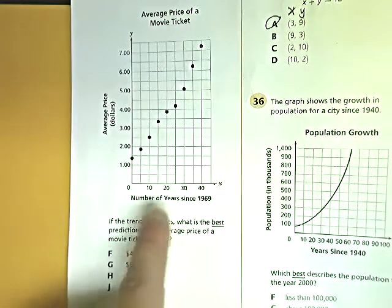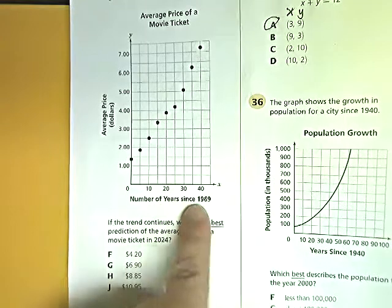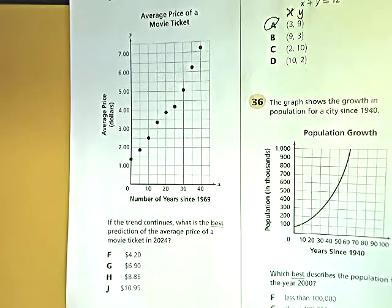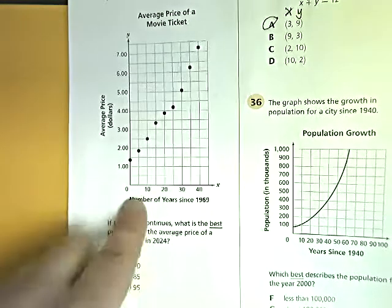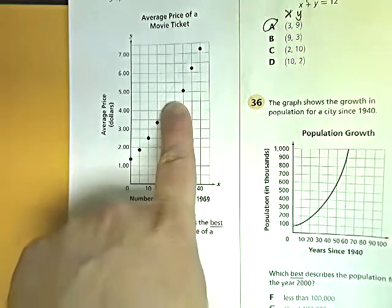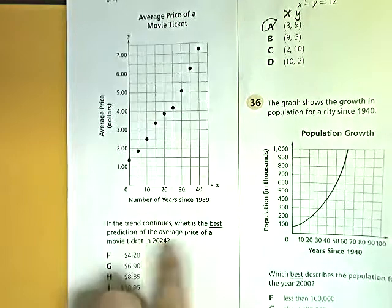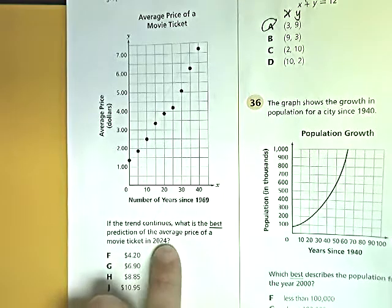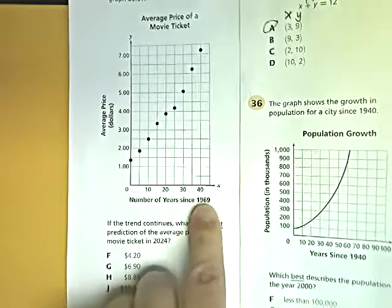The thing is, this says number of years since 1969. What is very possible for you to do is to go up to look for 24, look right in here and run your finger up and get the wrong answer. It says price in 2024, but this is since 1969.